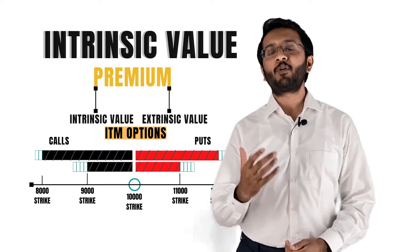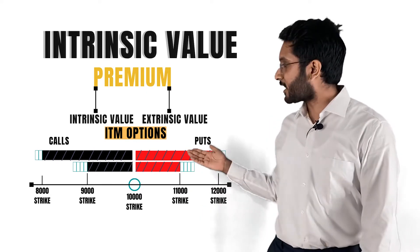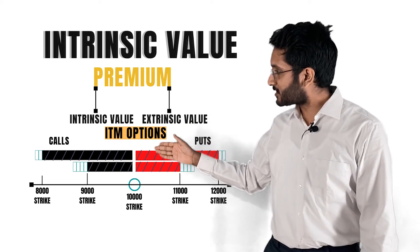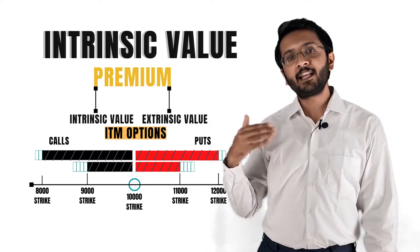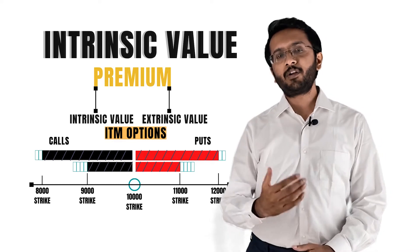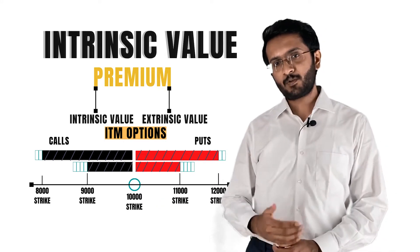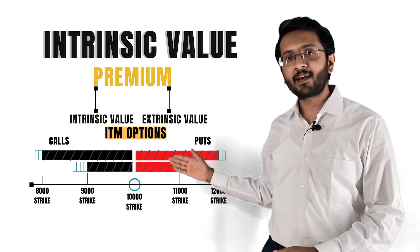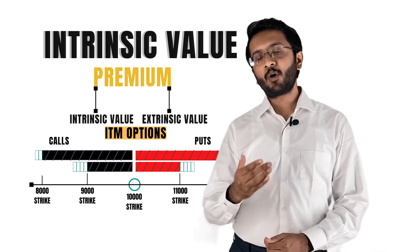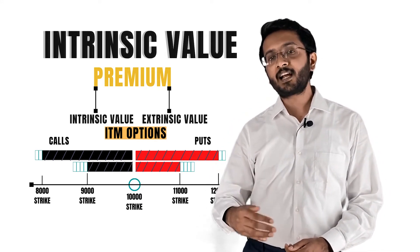It is very important that we understand both volatility and time value play a role in extrinsic value — it is not just time value taken into consideration. Now let's have a look at what intrinsic value means. On the graph over here, we can see that the current price of the underlying asset is at 10,000. The 9,000, 8,000, 7,000 strikes will all be in the money when considering a call option for this underlying asset. A call option is the right to purchase an underlying asset at a particular price at a later point of time.